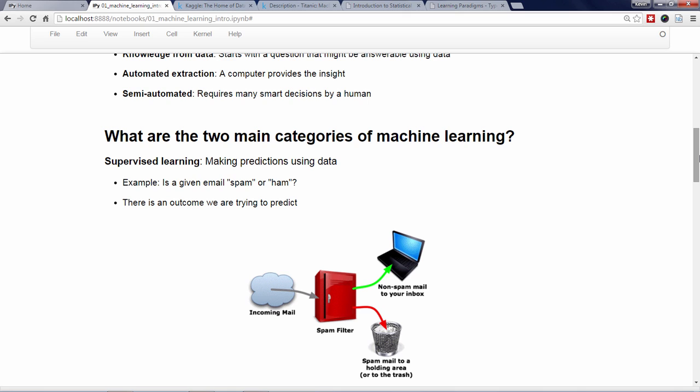For example, if my dataset is a series of email messages, my supervised learning task might be to predict whether each email message is spam or non-spam, which is also known as ham. This is supervised learning because there is a specific outcome we are trying to predict, namely ham or spam.